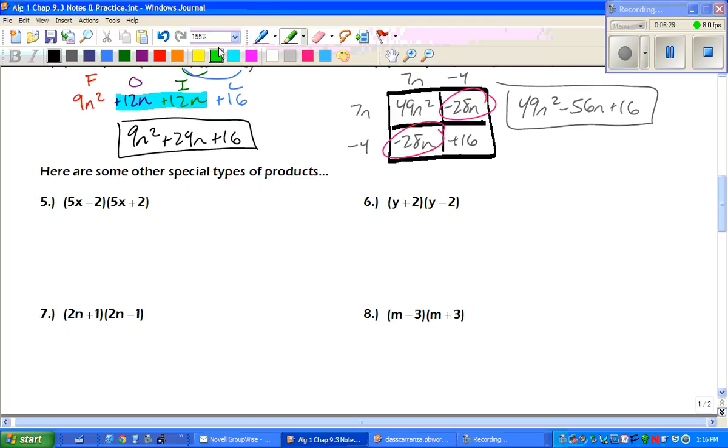A couple more special cases now. Take a look because now we have opposite symbols in between. So starting off with FOIL, we get 25x squared. The O gives us a positive 10x. The inside gives us negative 10x. And the last gives us a negative 4. Combine your like terms right here in the middle. And when you combine those, those actually cancel out. So we're left with 25x squared minus 4.